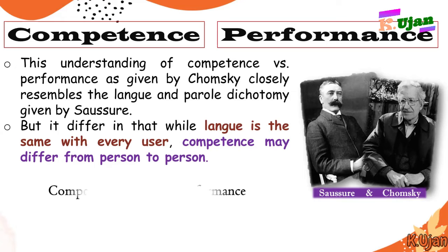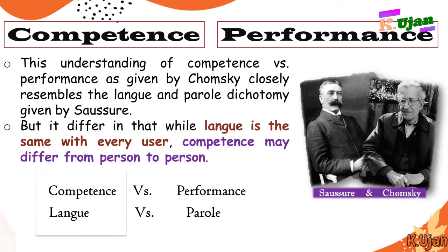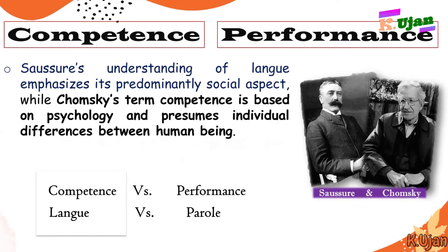Competence varies from person to person. Competence versus performance is equal to langue versus parole, but to some extent there is a difference between competence and langue. Saussure's understanding of langue emphasizes its predominantly social aspect, while Chomsky's term competence is based on psychology and pursues individual differences between human beings.